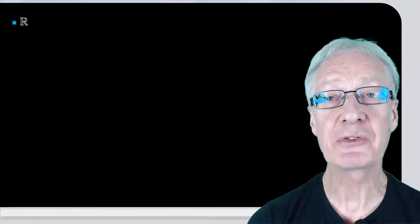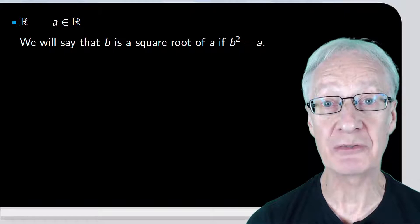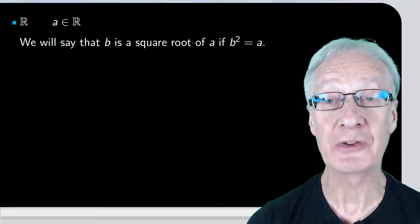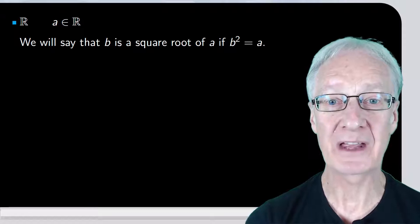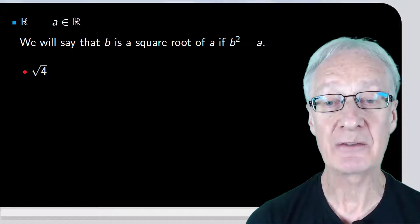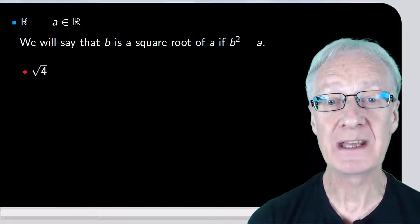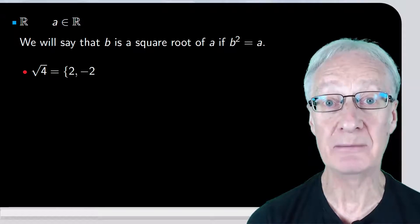Let's focus on the real numbers. And suppose that a is a real number. We say that b is a square root of a if it holds that b squared equals a. From this, we have that the square root of 4 are the real numbers such that when they're squared, they give 4.